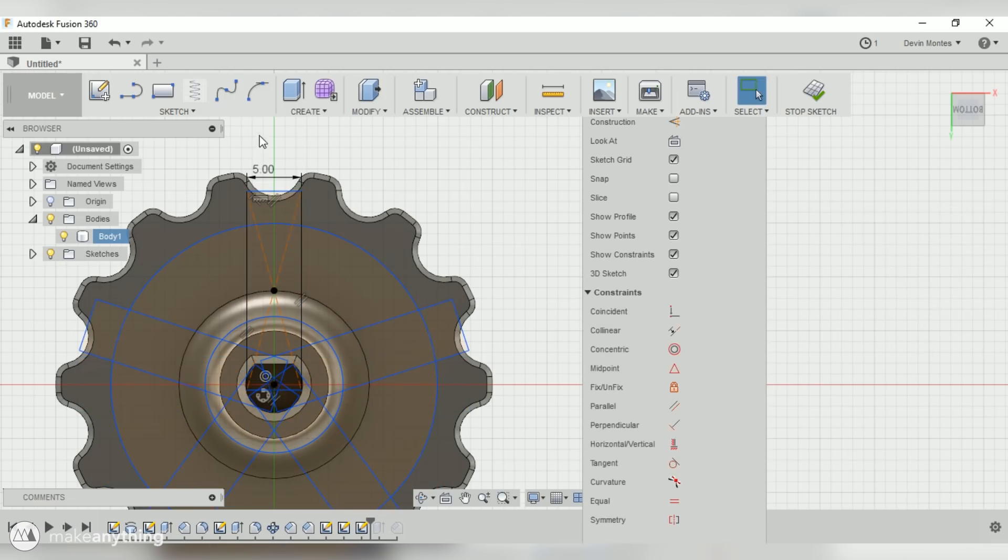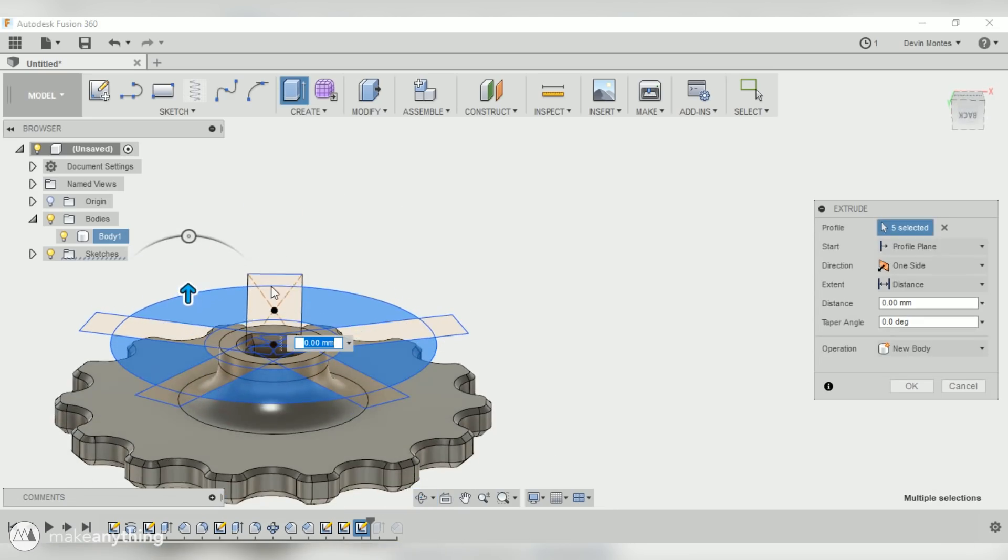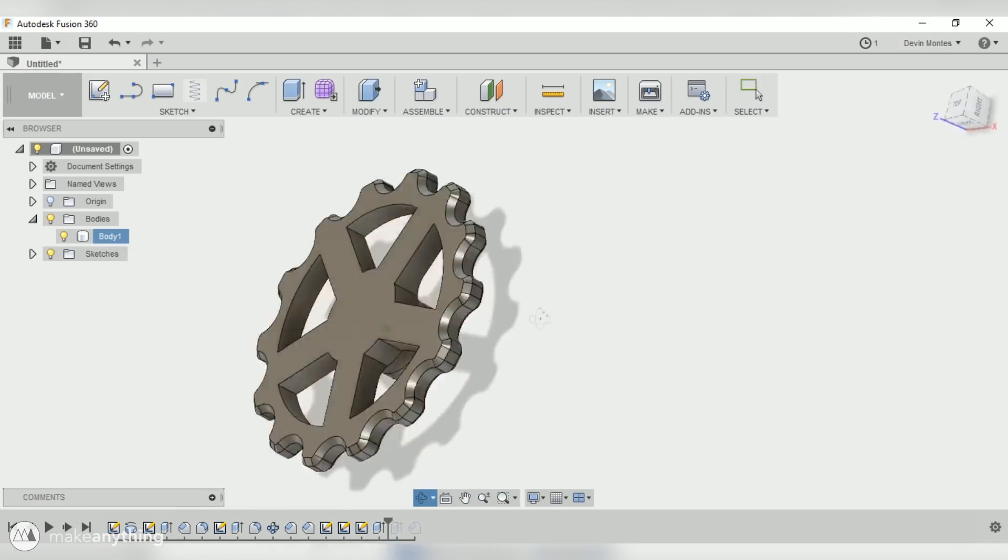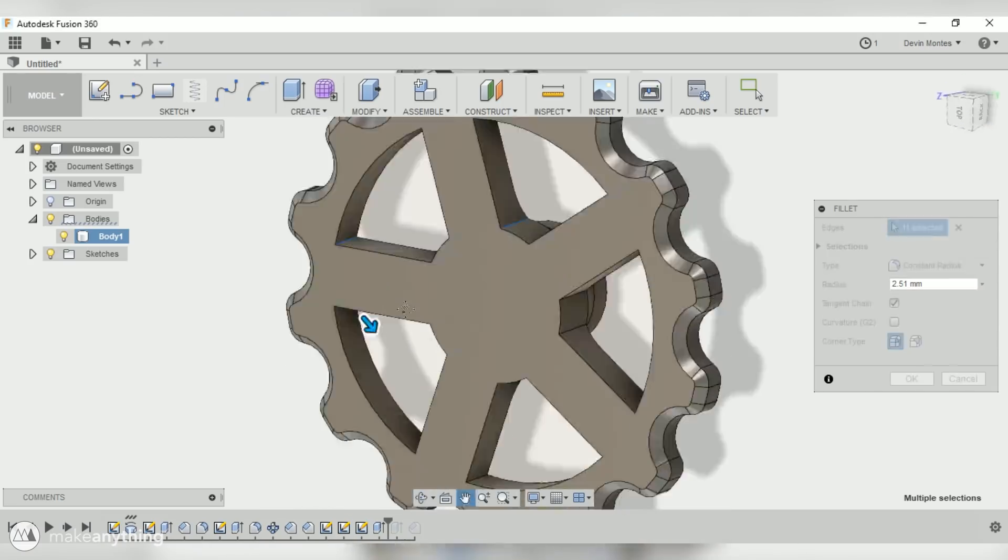And then do an extrude cut and select just those parts that we want to cut out. So now I'll cut that all the way through, and as you can see we've got this wheel that is all held together but it's got some hollow parts. I'll put some fillets on there because I always like to round things out.